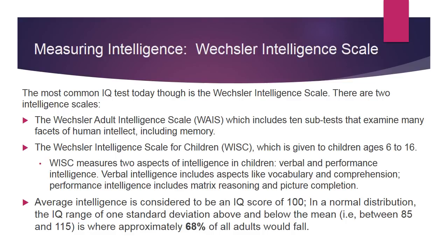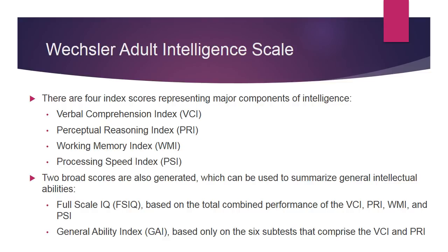The four index scores representing major components of intelligence for the Adult Intelligence Scale include the Verbal Comprehension Index, Perceptual Reasoning Index, Working Memory Index, and the Processing Speed Index. Two broad scores are also generated: the full-scale IQ based on the total combined performances of the four index scores, and the General Ability Index based only on the six subtests comprising the Verbal Comprehension Index and the Perceptual Reasoning Index.